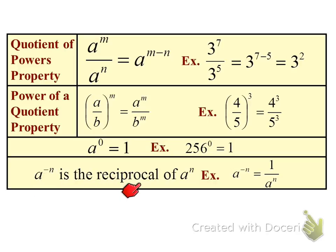Anytime you have a negative power, it's the reciprocal. So a to the negative n is 1 over a to the n. If the negative power is in the denominator, then that means you need to move it to the numerator.